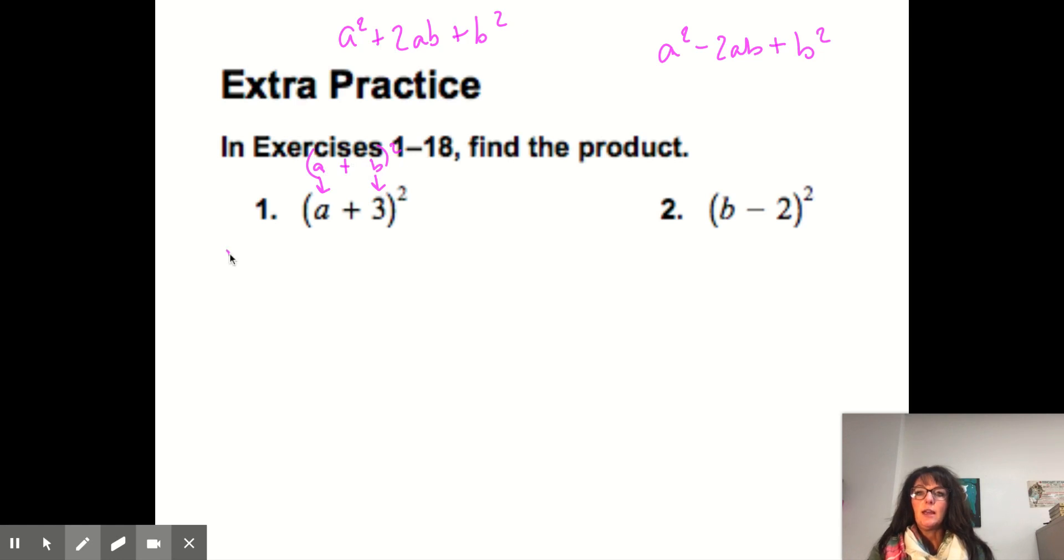So (a + 3)² equals a² + 2 times a times 3 + 3². So I'm just writing it out for you so that you understand how we're applying this pattern. And that's all it is. It's a shortcut pattern that we're teaching you to the multiplication or FOIL or double distributive. So then you'll get a² + 6a + 9.